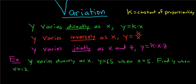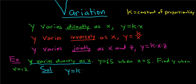When you do these problems, work slowly and carefully, one step at a time. Step one: read the question. Y varies directly as X, so you write down Y equals KX. Step two is to find K. Use the next piece of information in the problem — Y is 65 when X is 5 — to find K.